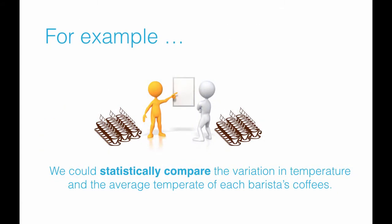An example here would be: we could statistically compare the variation in temperature and the average temperature for each of the baristas' coffees. So we could pull the coffee temperatures apart by who makes it, compare those groups, and use some sort of hypothesis test to do so.